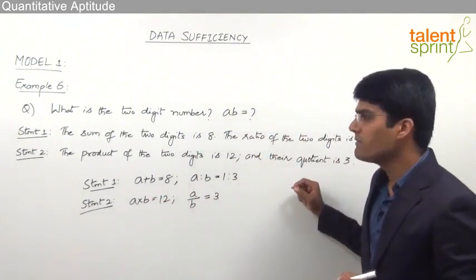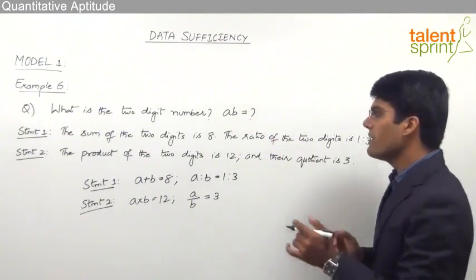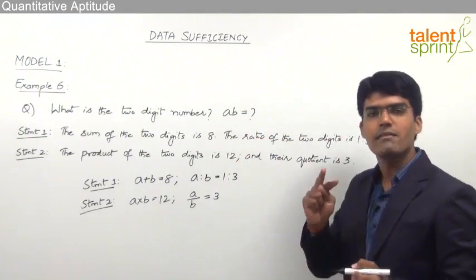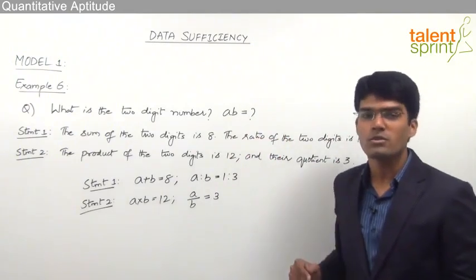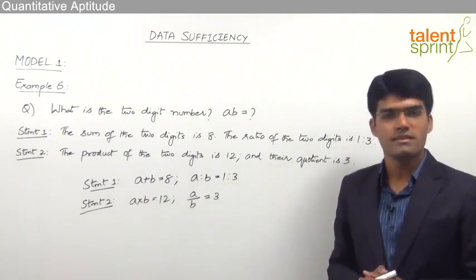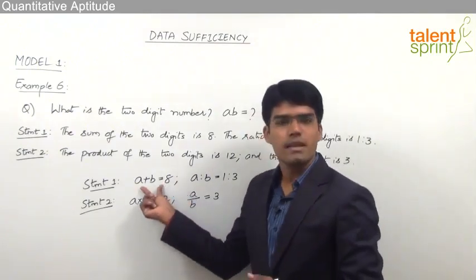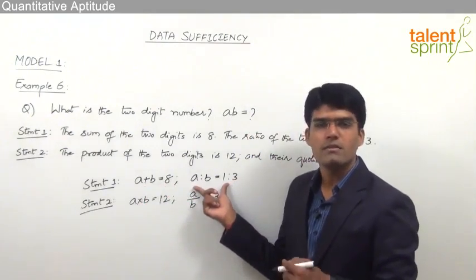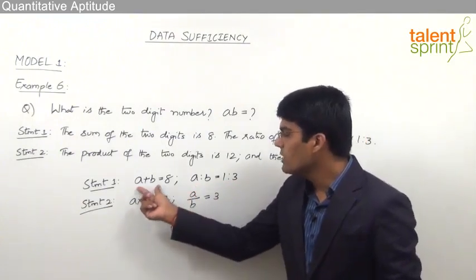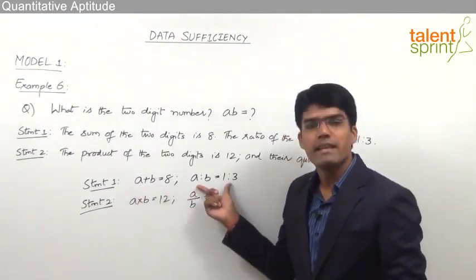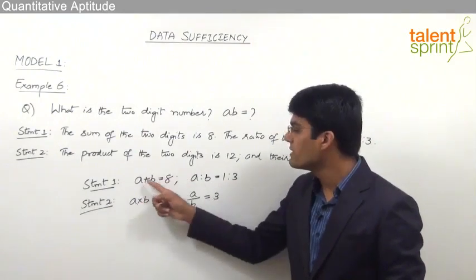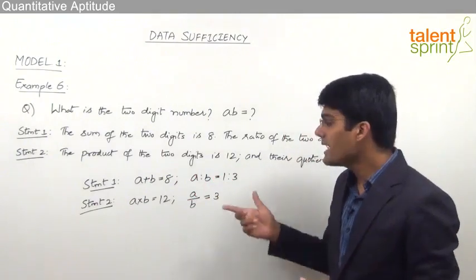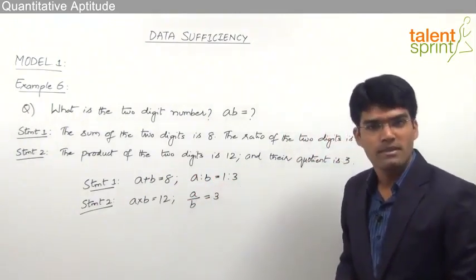We are supposed to find the two-digit number. To do so we need to know digits A and B — that means we have two variables, and to solve for two variables, a minimum of two equations are required. Looking at Statement 1: A plus B equals 8 is one equation, and A by B equals 1 by 3 is the other. Two equations and two variables — we can solve them and find A and B, so the answer can be obtained from Statement 1.